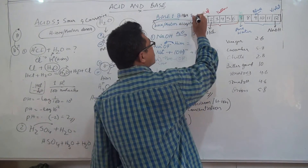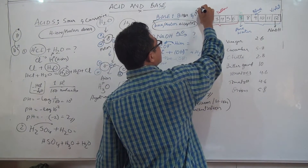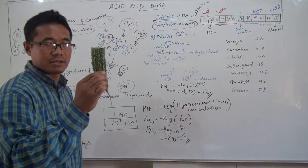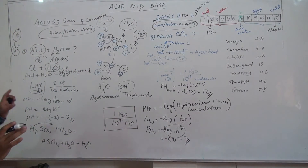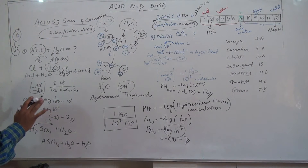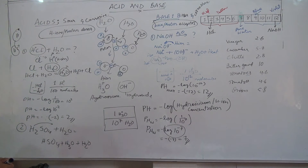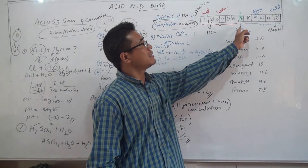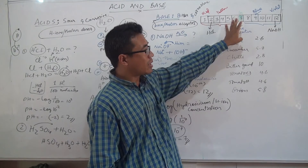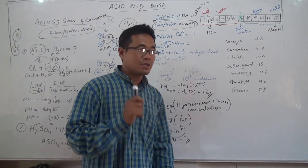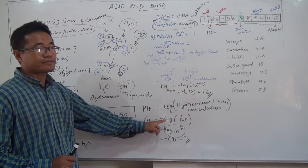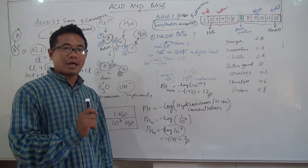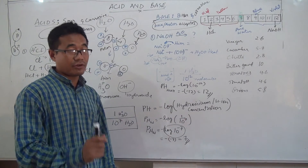A base is bitter and can also be corrosive. Through the concentration of hydronium ions, we find out how basic or how acidic a substance is. We use the logarithmic system because it becomes very easy to work with very high numbers like 10 to the power of 7.